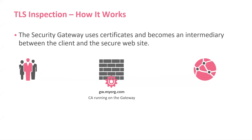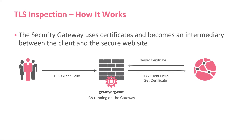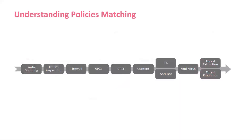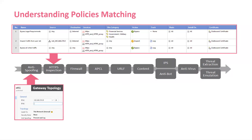So how does it work? Basically the security gateway is the intermediary between the client and the secure website. The client sends a hello; we intercept it at the gateway. We send it to get the certificate, the certificate comes back, we act as the intermediary again. Then we have policy matching: first anti-spoofing, then HTTPS inspection — we decide if we're going to inspect right there based on rules — then it goes to access control and then to all the threat prevention blades.